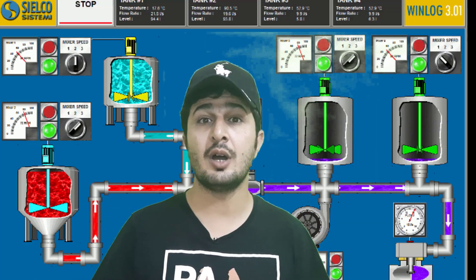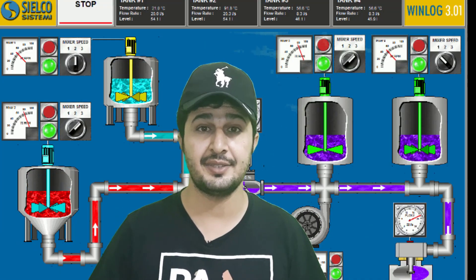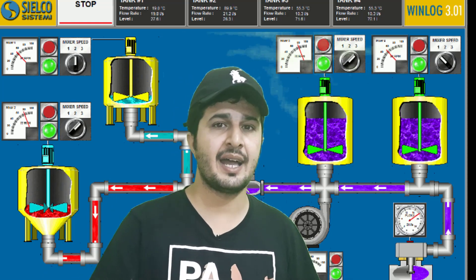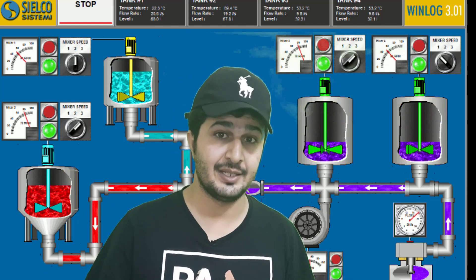DCS stands for Distributed Control System, and SCADA stands for Supervisory Control and Data Acquisition system. You can notice that we have the word 'control' common in both SCADA and DCS, meaning both systems have control functionality. In short, the line between DCS and SCADA system is very blurry.